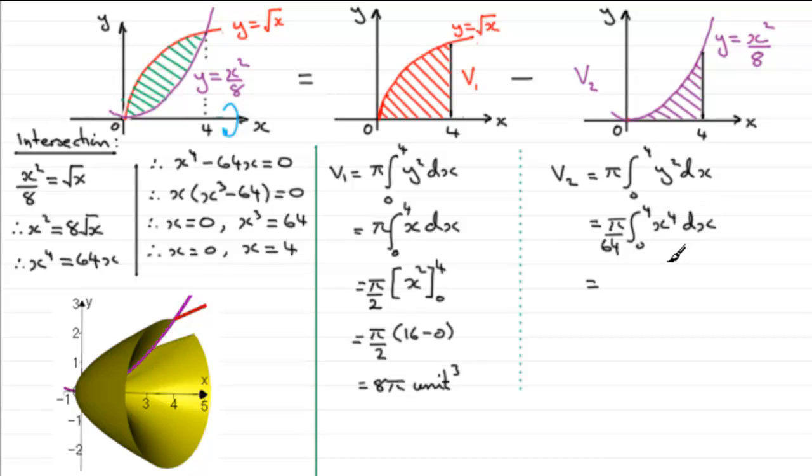Now if I integrate x to the power 4 with respect to x it's going to be x to the power 5 over 5. And 5 times 64 is 320. So what we've got here is pi divided by 320 and that's going to be x to the power 5 going from 0 to 4.